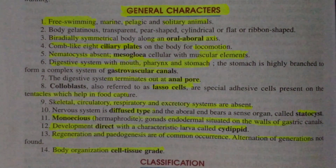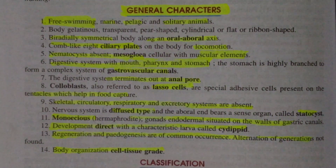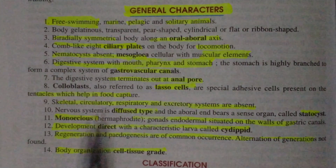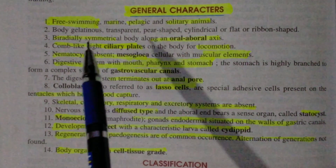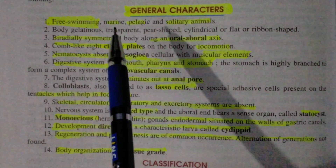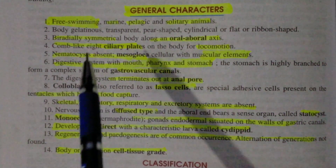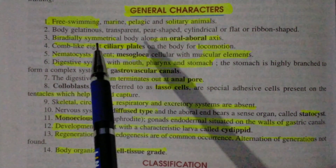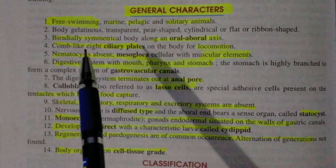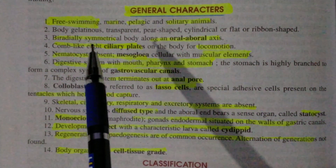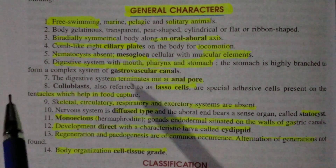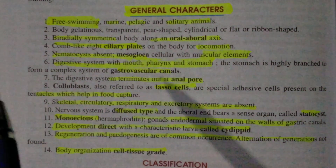All the organisms, all the individuals found in the phylum Ctenophora, they are free-swimming. The first important character is free-swimming. All individuals found in the minor phylum Ctenophora are free-living — they are freely moving and freely swimming in the water.